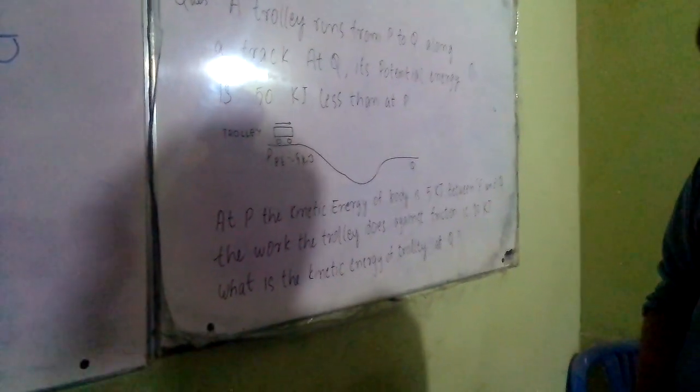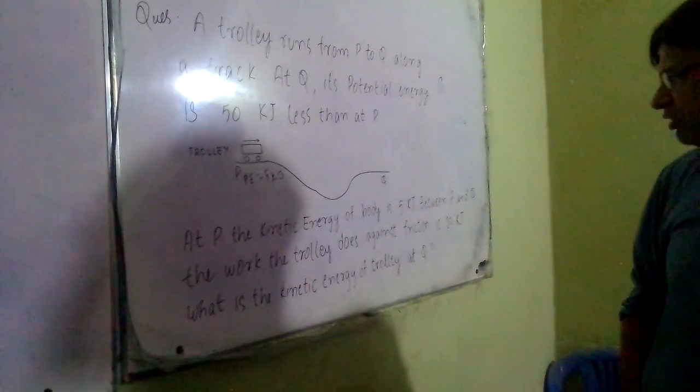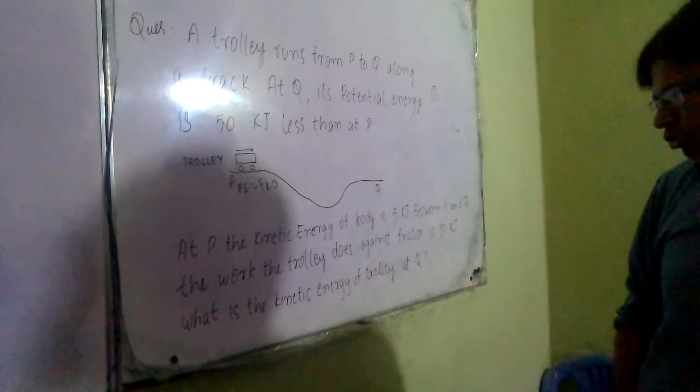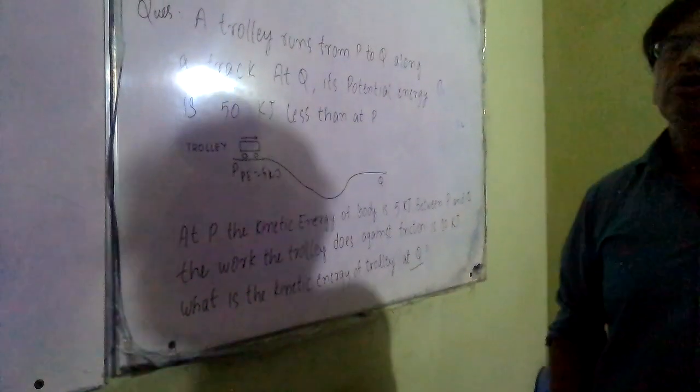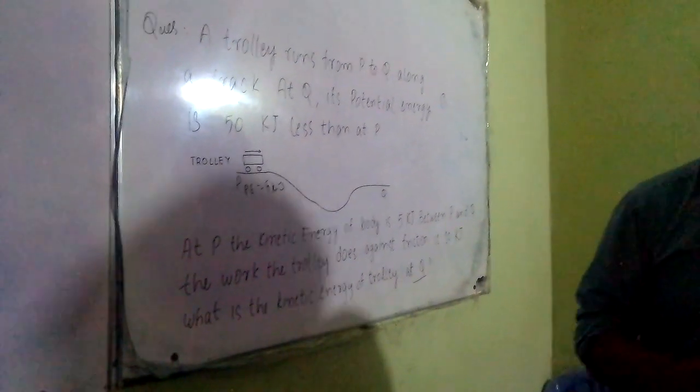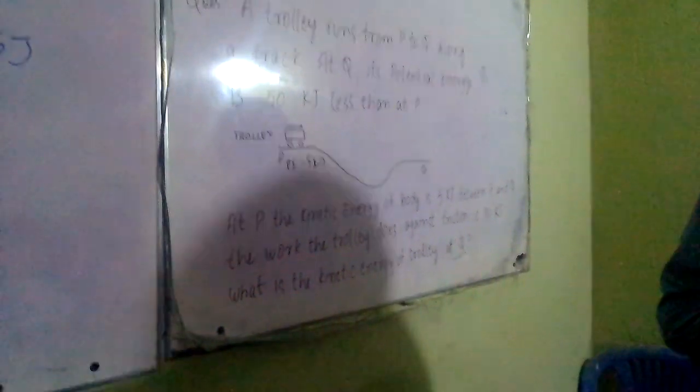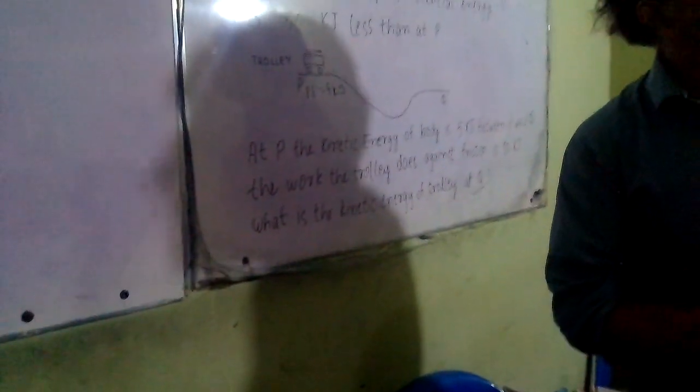Between P and Q, the work done on the trolley is 10 kJ. What is the kinetic energy of the trolley at Q? There are technical issues, and A level has conceptual issues. There are many questions from A level.